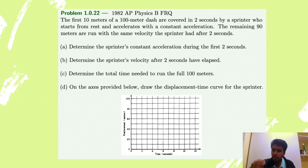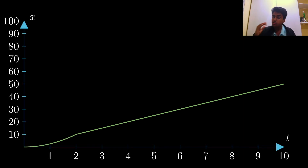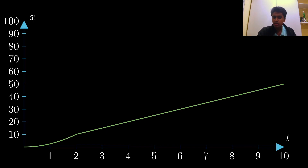Part D wants us to draw a position versus time graph. For the first two seconds the sprinter accelerates, so the position versus time graph will be a parabola. After the first two seconds the velocity is constant, so it becomes a linear line — it just increases linearly.